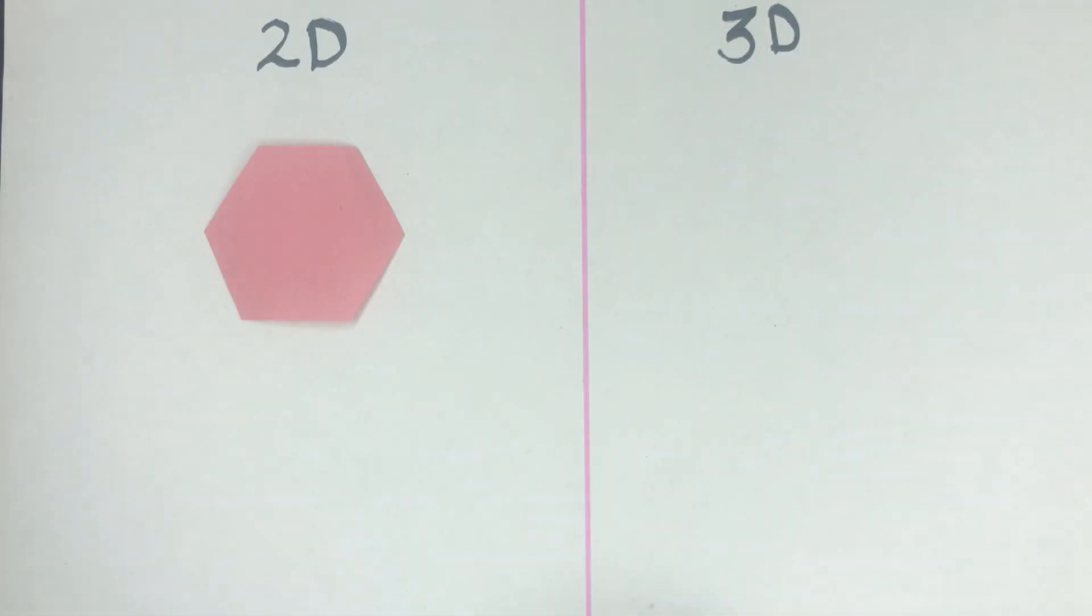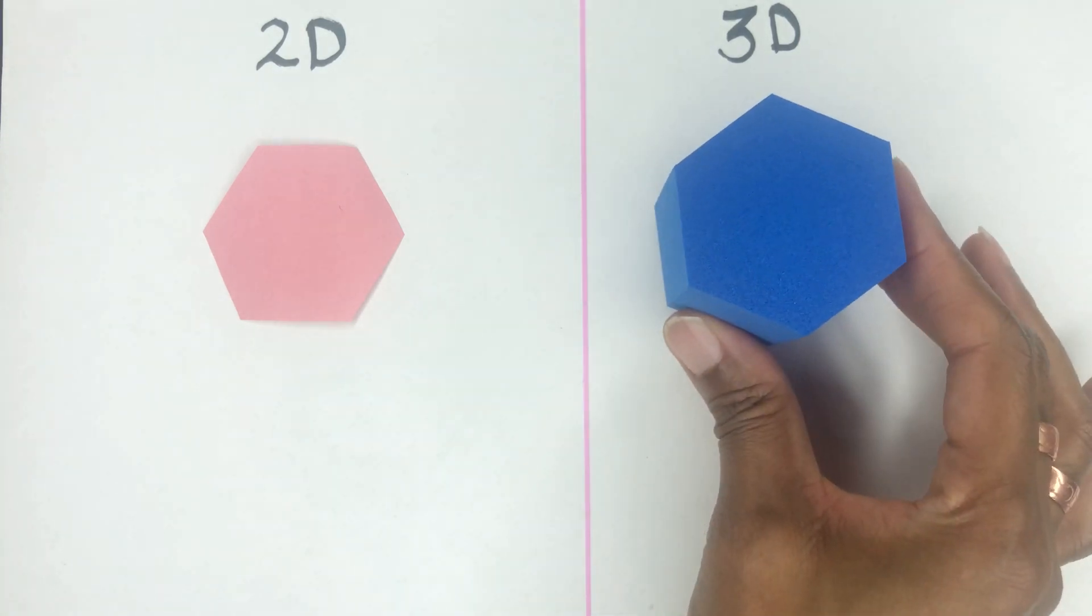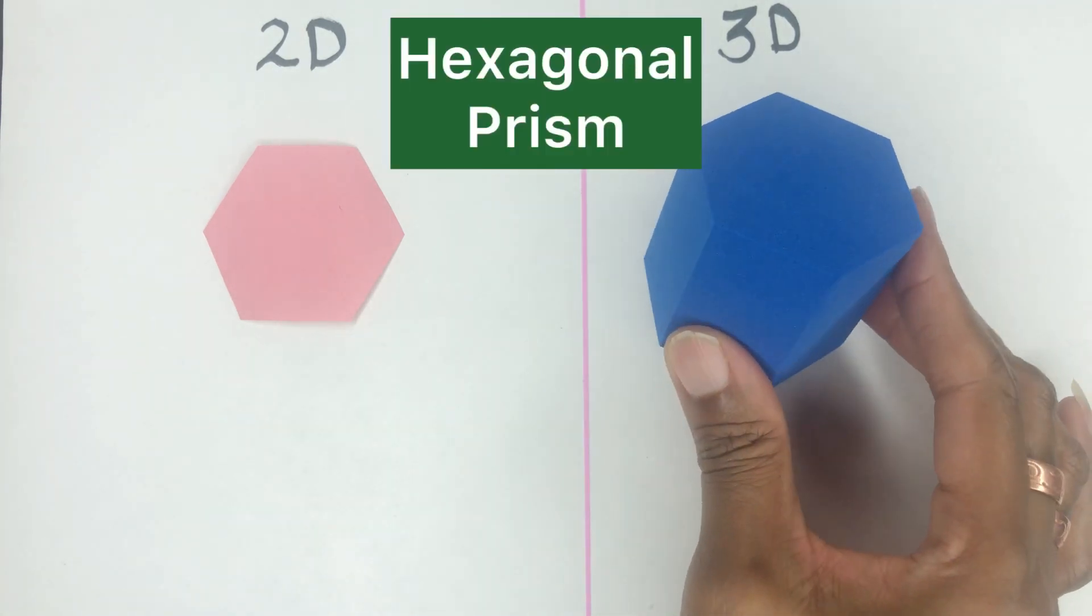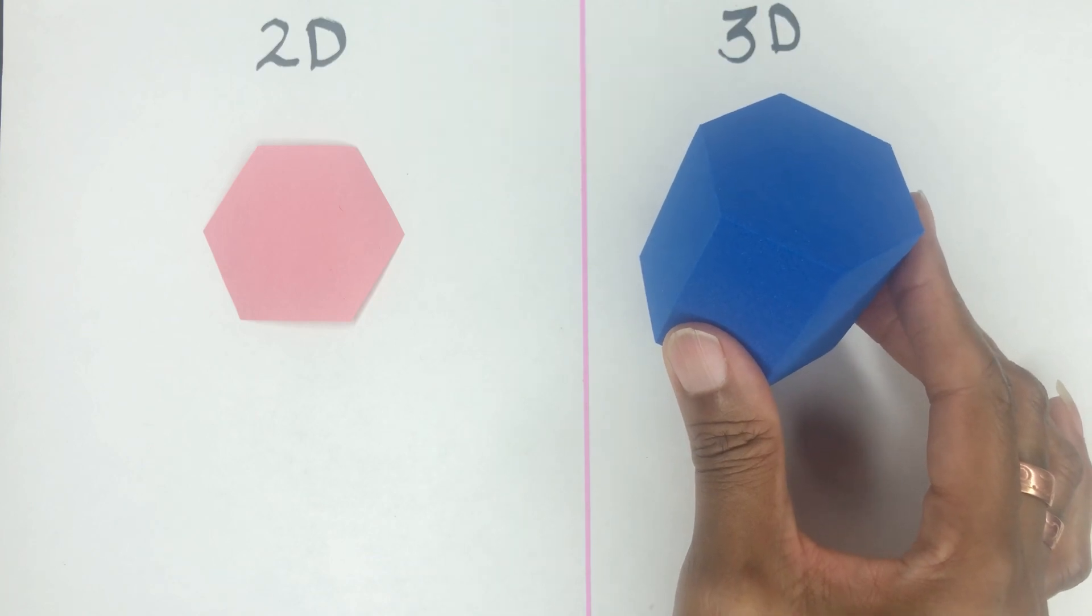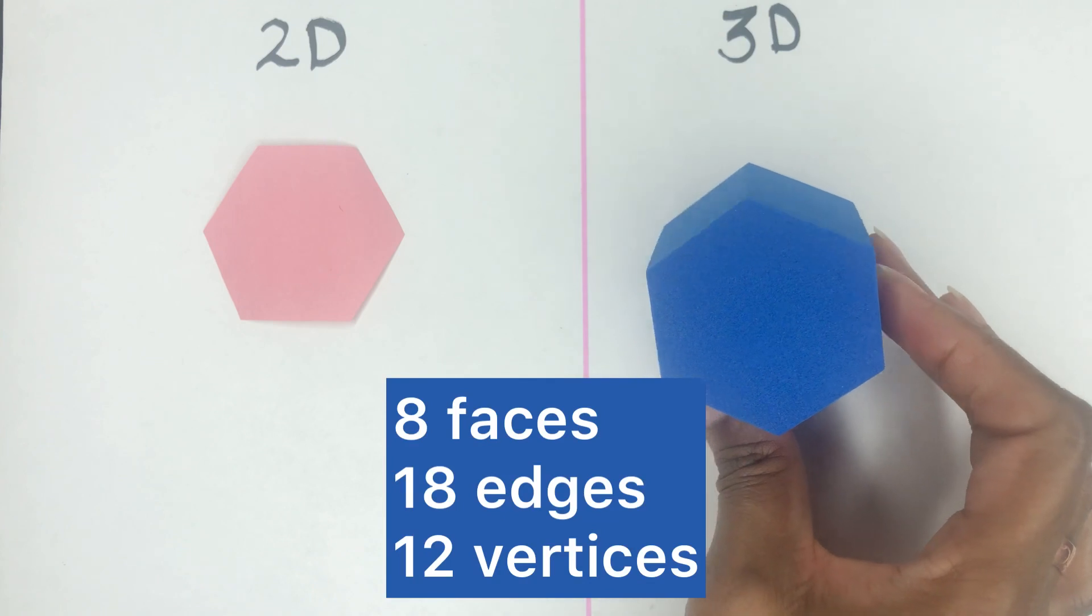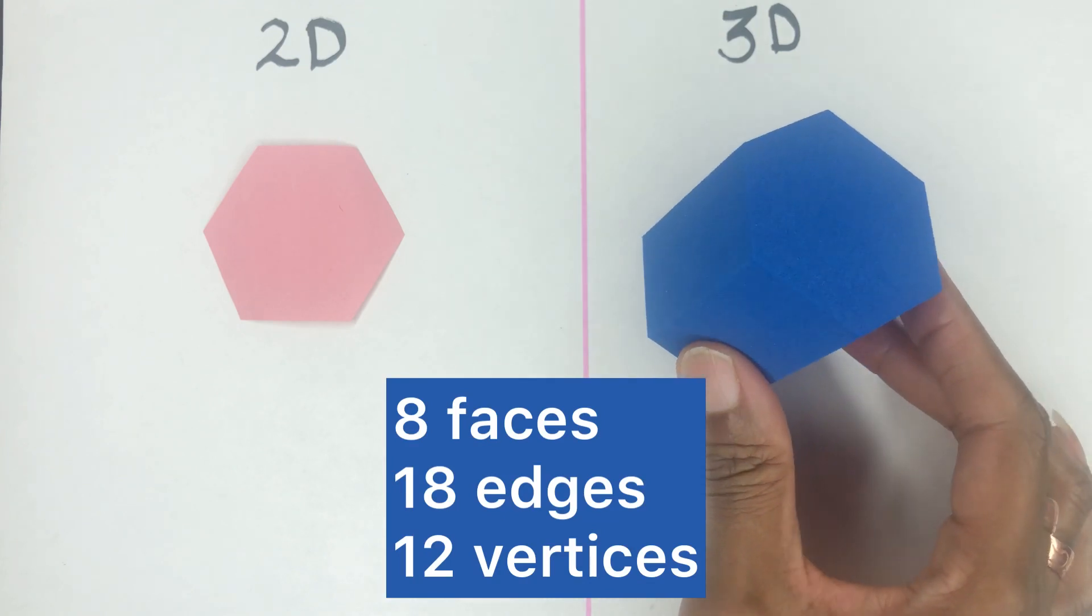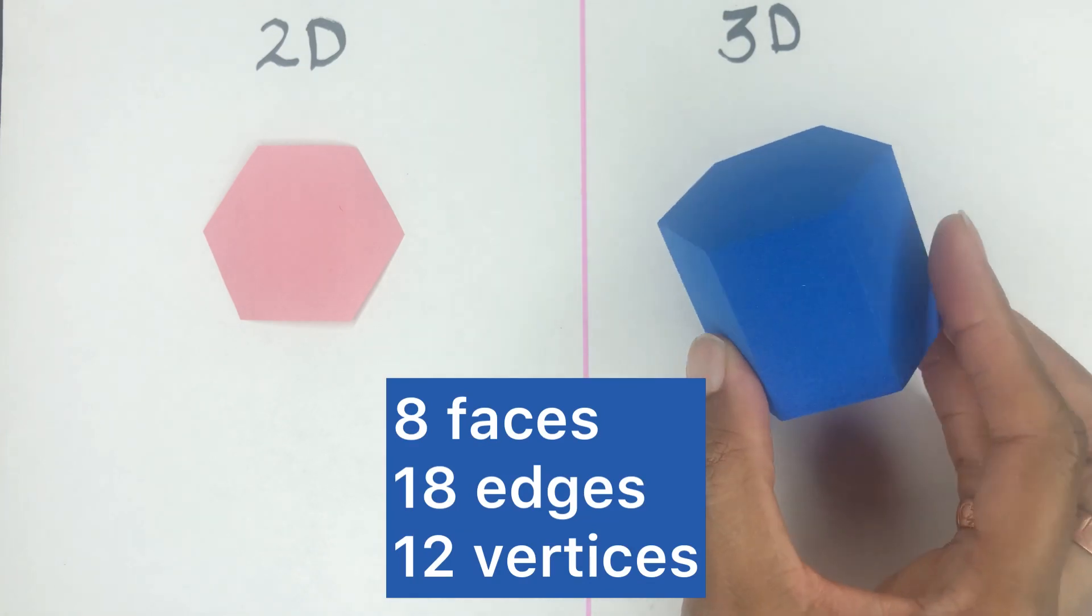Here we have a hexagon. Its 3D version is called the hexagonal prism. The properties of a hexagonal prism: it has eight faces, 18 edges, and 12 vertices.